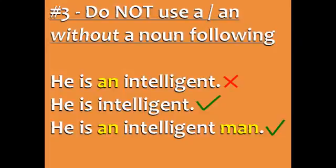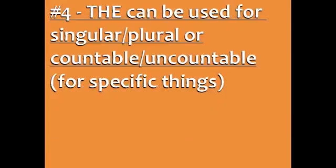Here's another example. 'He is an intelligent' — this is not possible because 'intelligent' is an adjective and there is no noun. Instead, say 'he is intelligent' or 'he is an intelligent man.' The word 'the' can be used for singular or plural and countable or uncountable for specific things, not for general things.